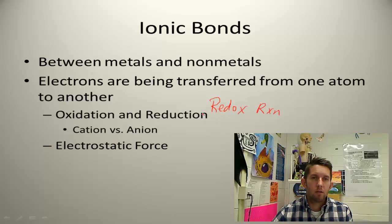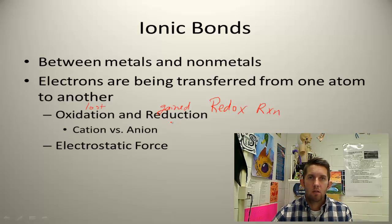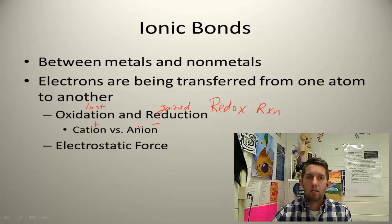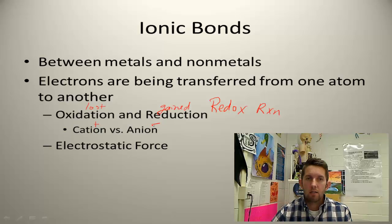In a redox reaction, you have electrons being gained and lost — they're changing hands. The atom that gains electrons often becomes negatively charged, making it an anion. The atom that loses electrons now has more protons than electrons, giving it a positive charge — it's a cation. Anions are attracted to cations, just like opposite ends of a magnet. This is the electrostatic force.